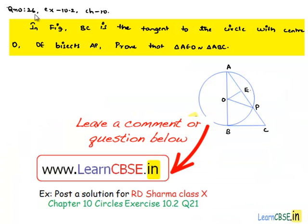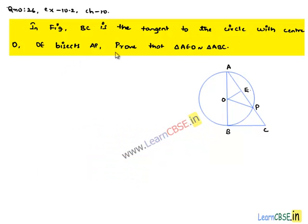Let's discuss question number 26, Exercise 10.2, Chapter 10. In the figure, BC is the tangent to the circle with center O. OE bisects AP. Prove that triangle AEO is similar to triangle ABC.